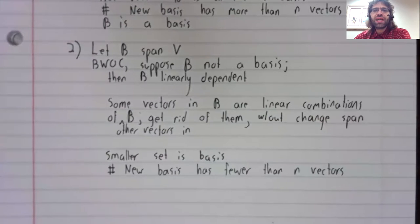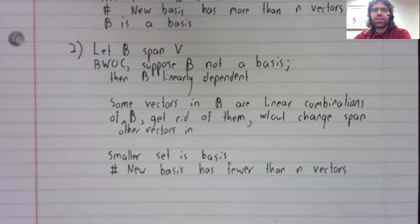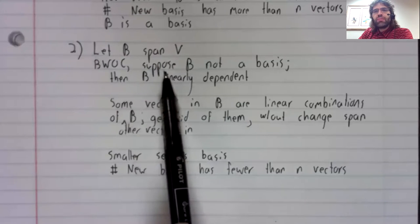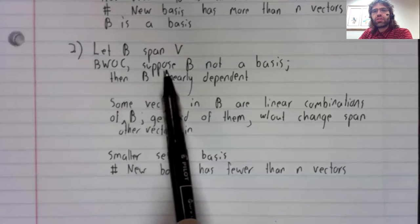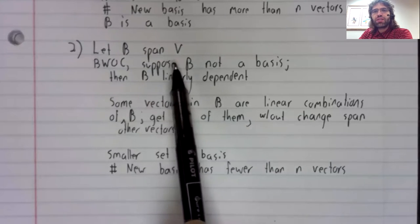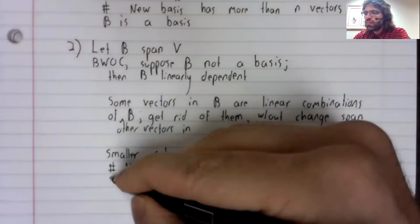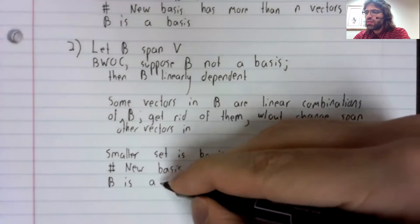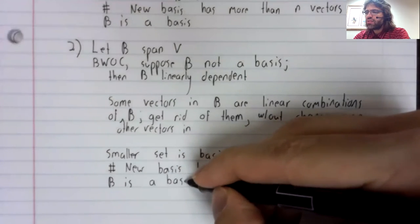Every basis has to have exactly n vectors. So this supposition we made by way of contradiction must in fact be false. B is a basis.